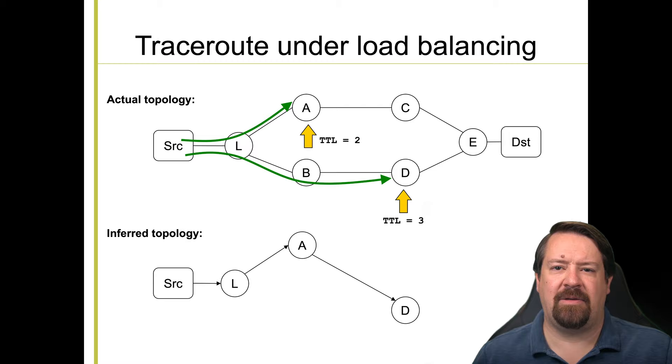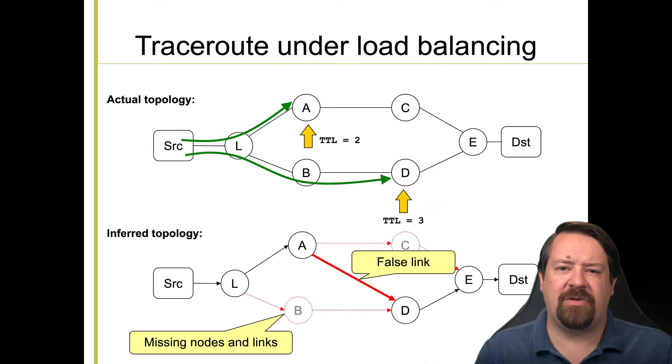No matter which path it takes, our next packet expires at E, and we infer the link between D and E, and get to the destination. Not only have we missed a bunch of the topology, we've also inferred a link that doesn't even exist.